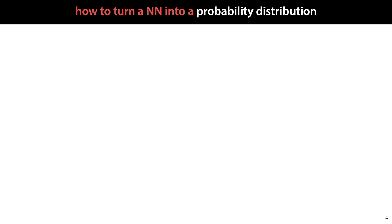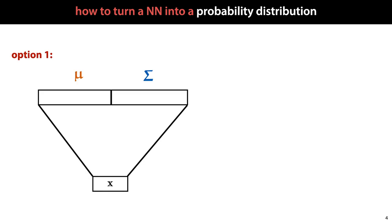A plain neural network is purely deterministic. It translates an input to an output, and it does the same thing every time with no randomness. So how do we turn this into a probability distribution? We have a few options. The first option is to take the output of the neural network and to interpret that as the parameters of a probability distribution.